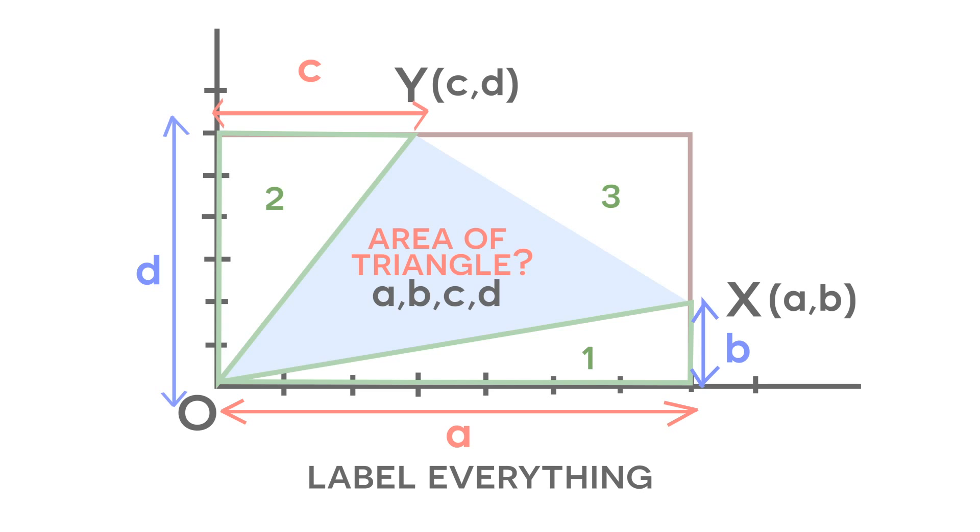And now let's look at triangle number 3. Well, using both coordinates, X and Y, we know that one side of this triangle is going to have a distance of A minus C, and the other side of this triangle is going to have a distance of D minus B.